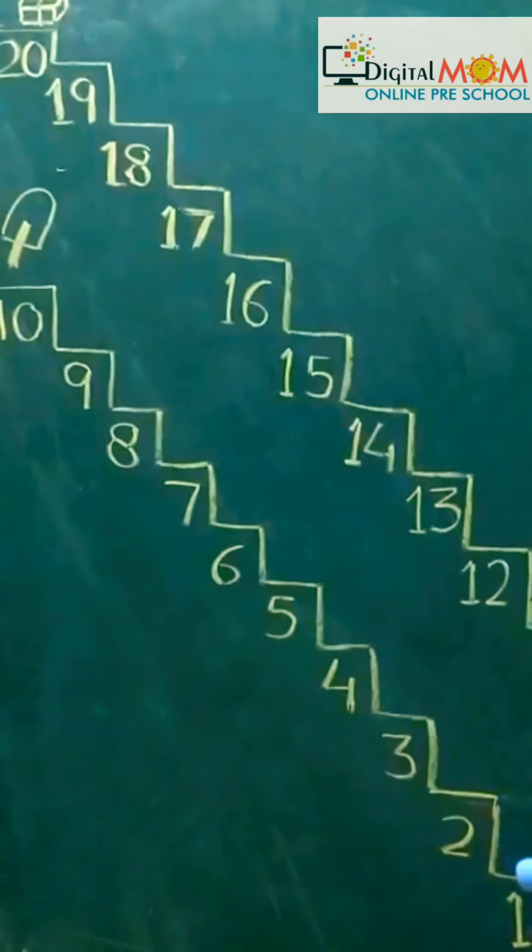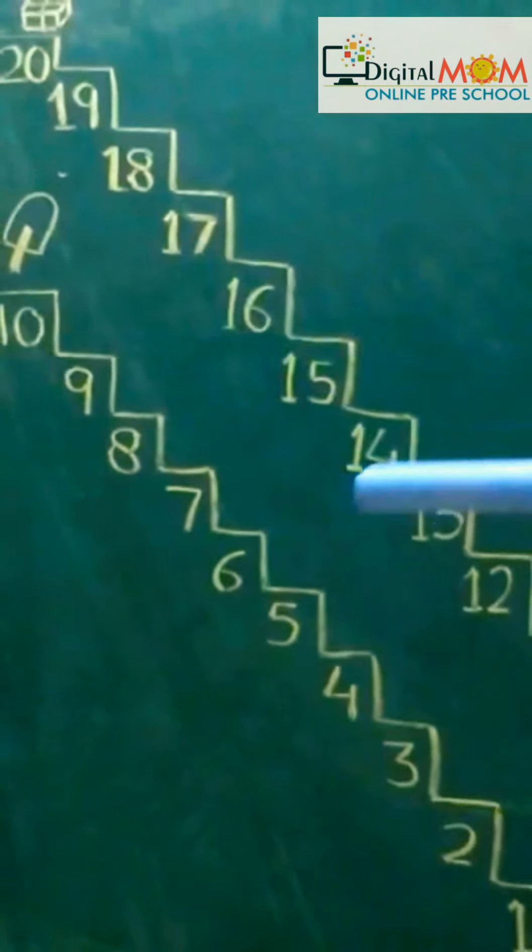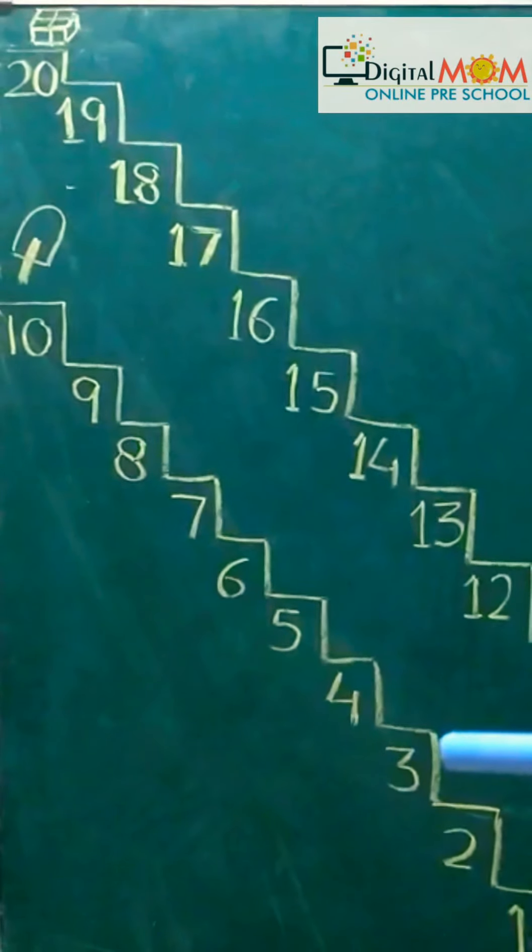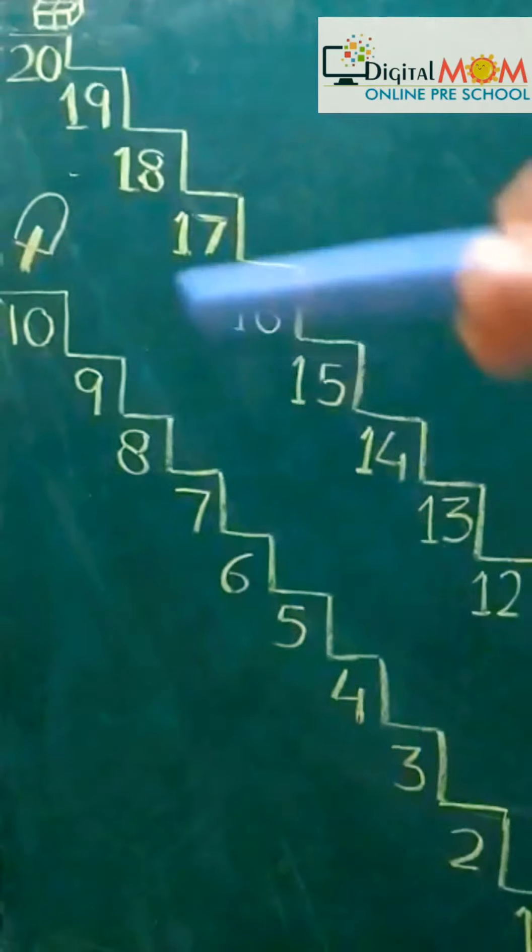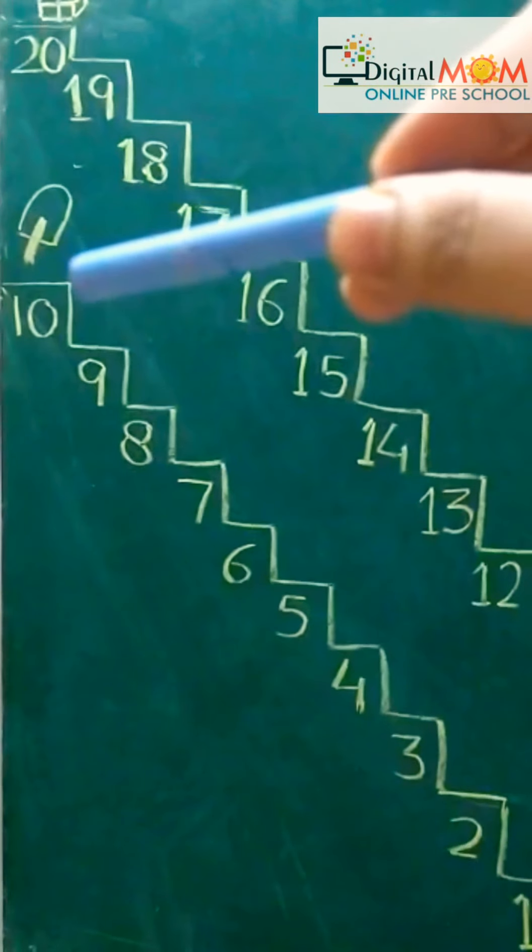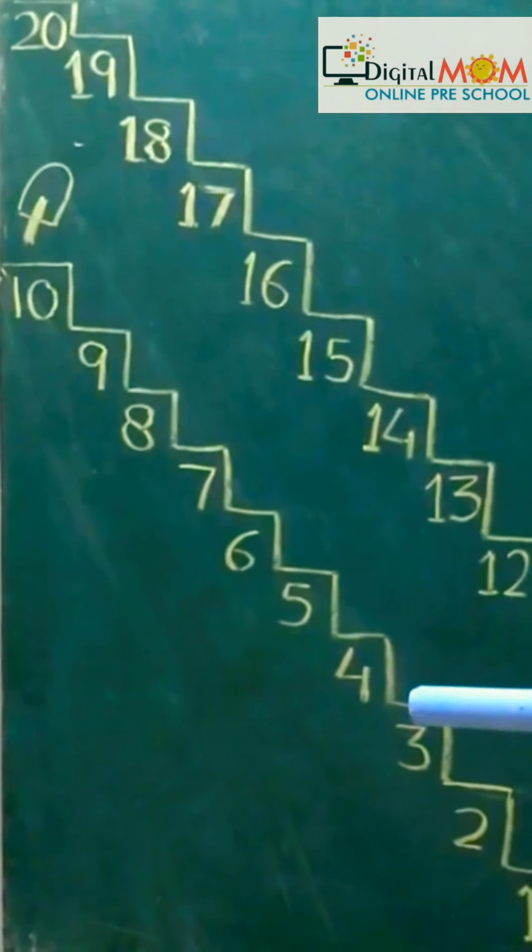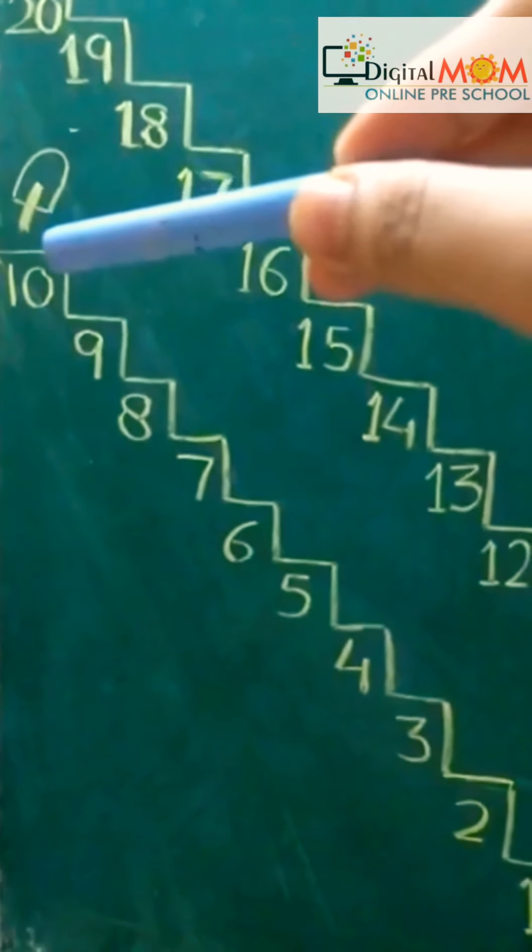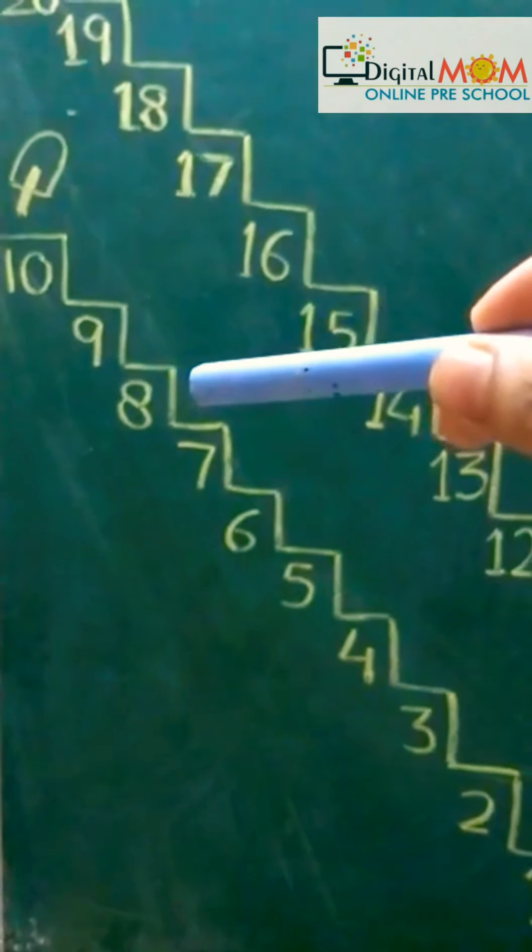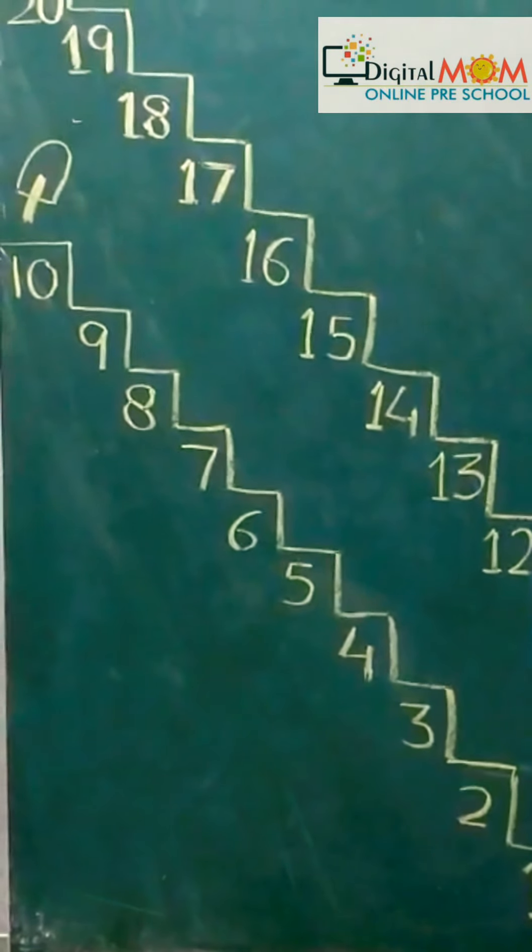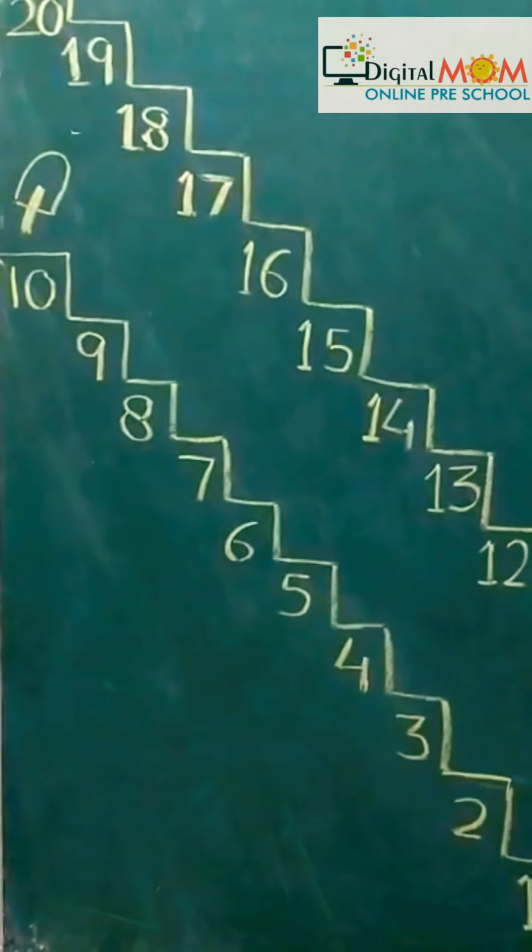But when you were coming back from the staircase, like from the top, you were coming down. So you were doing reverse or backward counting, because you were calling the numbers that are coming before each other. Like before 10 comes 9, before 9 comes 8, and so on.